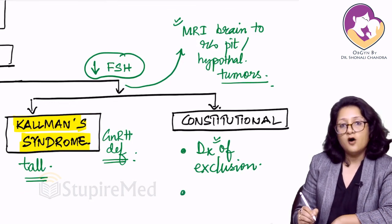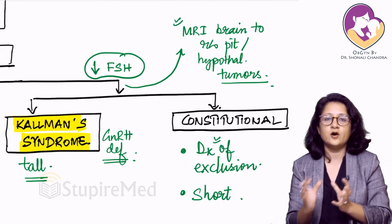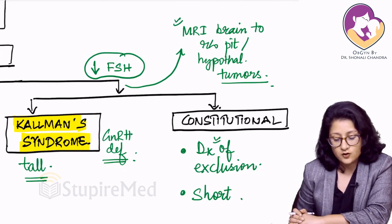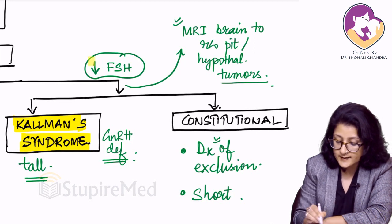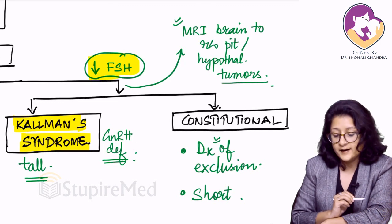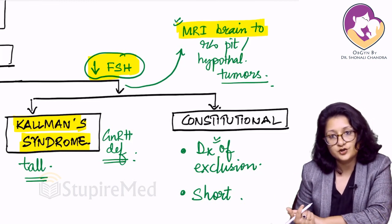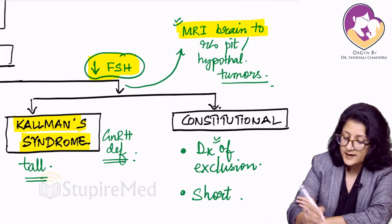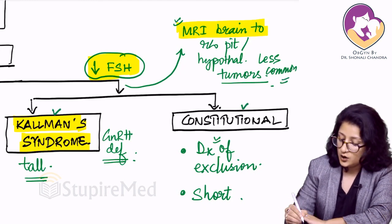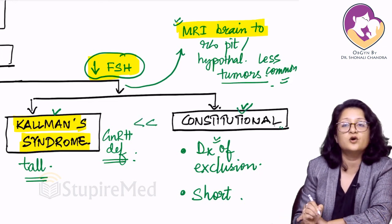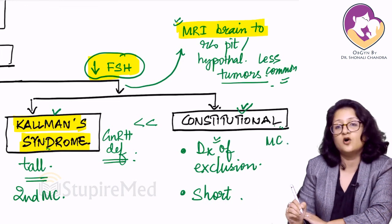In constitutional form of delayed puberty or primary amenorrhea, the height is going to be short. These are important clinical points in the differential diagnosis of primary amenorrhea with absent secondary sexual characteristics and decreased FSH. Among Kallmann's and constitutional, constitutional is more common. Constitutional is the most common cause and Kallmann syndrome is the second most common.